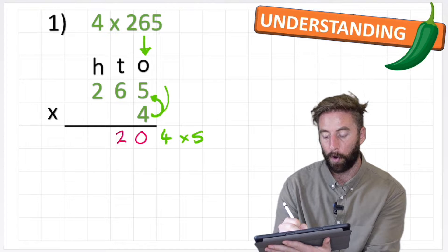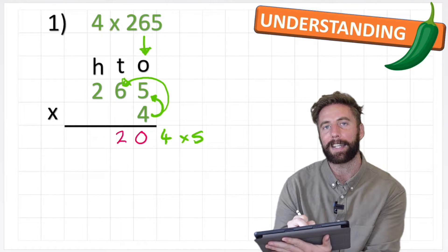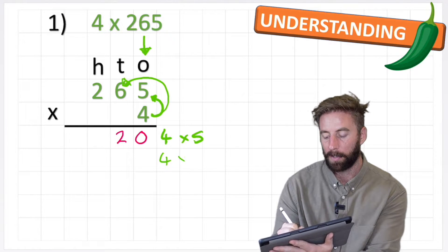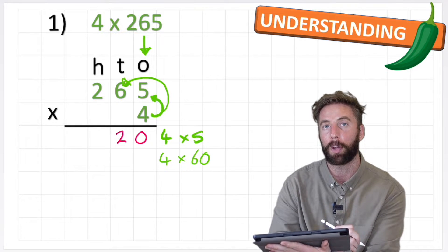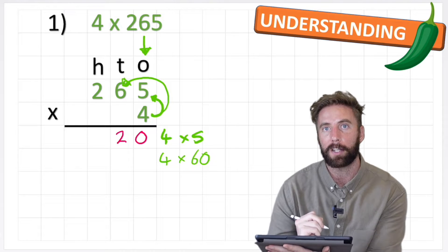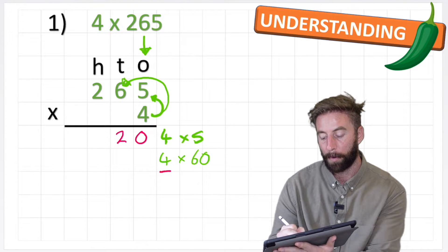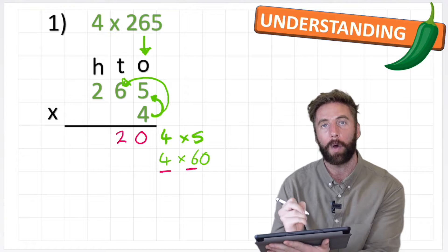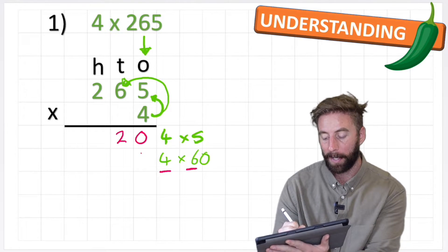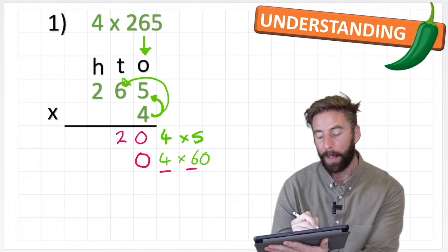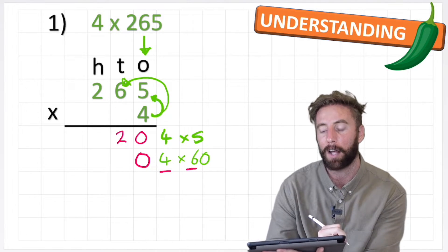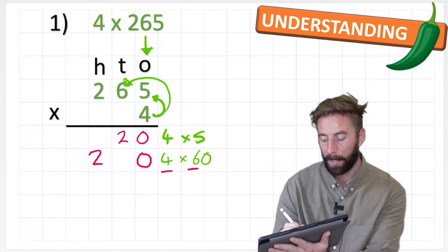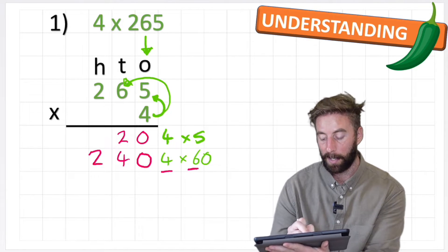Next we move to 4 times 6, but it's not just a 6 — it's in the tens column so it holds the value of 60. So my question is 4 times 60. Rather than doing that directly, it's much easier to multiply 4 times 6 and then make the answer 10 times bigger by putting a special placeholder. So 4 times 6 is 24, and by placing it in the next column with a placeholder, I've written 240. So 4 times 60 is 240.